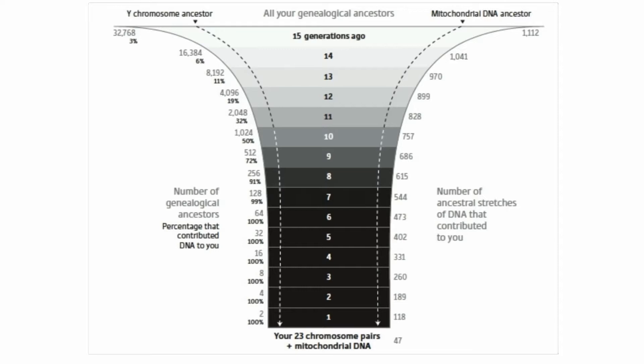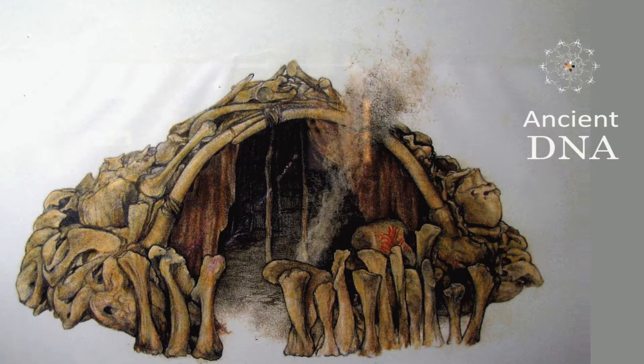Eventually, the number of DNA stretches you have from various ancestors is less than the number of ancestors you have. After about 10 generations, roughly half of your ancestors will have given you no DNA. In reality, the number of ancestors does not double every generation, as that assumes all ancestors to be totally unrelated — which was definitely not the case, particularly among hunter-gatherers where population size was smaller and ancestors were related. The number of homozygous-by-descent segments indicates relatedness among ancestors.